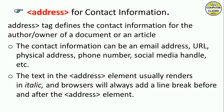The next tag is the address tag for contact information. The address tag defines contact information for the author or owner of a document or article. When we visit websites and read articles, the contact information can be an email address, URL, physical address, phone number, social media handle, etc. When we use the address element, it renders the address in italics.